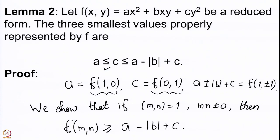Let us also quickly observe that the inequalities A ≤ C ≤ A − |B| + C are indeed correct. We clearly have C ≥ A because our form is reduced. The second inequality holds because A − |B| ≥ 0: since the form is reduced, b ranges from −A to A, so |B| can never exceed A. Therefore A − |B| is either positive or zero, and so A − |B| + C ≥ A. These three numbers are in the stated order and are represented properly by F.